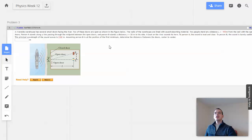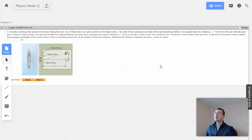To Person A, the sound is loud and clear. To Person B, the sound is barely audible. The principal wavelength of the sound is 2.5 meters. Assuming Person B is at the position of the first minimum, determine the distance D between the doors, center to center.